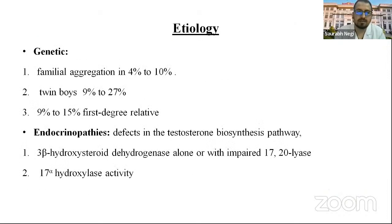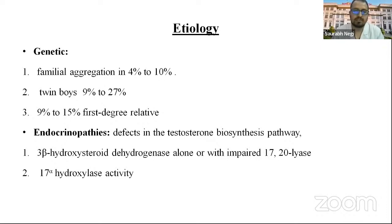In the etiology, genetic causes: familial aggregation is found in 4 to 10% of cases. Twin boys have an incidence rate of 9 to 27% and first-degree relatives have an incidence of 9 to 15%. Related to endocrinopathies, mainly defect of the testosterone biosynthesis pathway — especially defect in the 3-beta-hydroxysteroid dehydrogenase along with or impaired 17,20-lyase, and another defect with the enzyme 17-alpha hydroxylase activity.